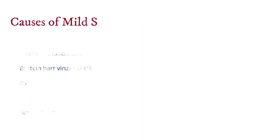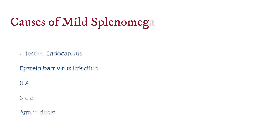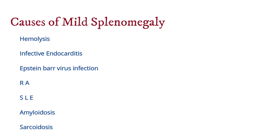Causes of mild splenomegaly include hemolysis, infective endocarditis, Epstein-Barr virus infection, rheumatoid arthritis, SLE, amyloidosis, and sarcoidosis.